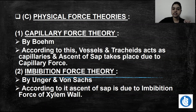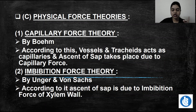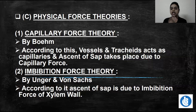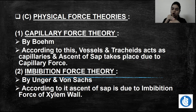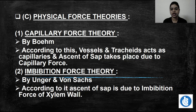The other theory is the imbibition force theory. According to the imbibition force theory, imbibition is a surface phenomenon in which particles of water adhere onto a surface like rock or seed, and the material is placed inside it, making it very strong. That was the concept of imbibition we learned earlier.